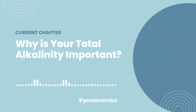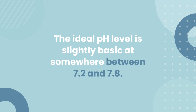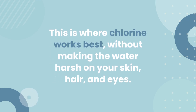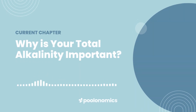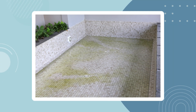Why is your total alkalinity important? Total alkalinity matters because your pH level matters. The ideal pH level for your pool water is slightly basic, at somewhere between 7.2 and 7.8. This is where chlorine works best without making the water too harsh on your skin, hair and eyes. Keeping your pH level within this range is extremely difficult without total alkalinity keeping guard, as it provides the necessary buffer to counter small changes in the water chemistry. Without it, your pH level could easily fall too low, causing the water to become corrosive to your pool surfaces and equipment, leading to a problem known as pool etching.